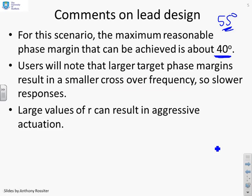Users will note that larger target phase margins will result in smaller crossover frequencies, so slower responses. So you're going to have to deal with a trade-off here. Are you prepared to accept a lower phase margin to get a faster response? Or do you want a bigger phase margin, but a slower response? Large values of r can result in aggressive actuation.